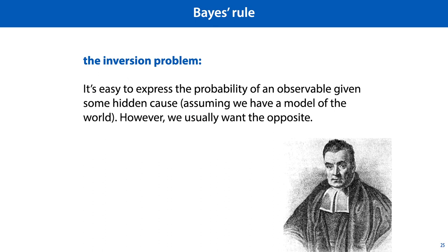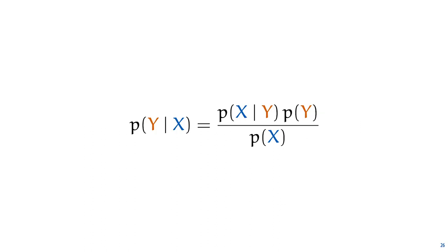The final subject that we need to cover is Bayes' rule. Bayes' rule is a solution to the inversion problem, which we can state as follows. It's often easy to express the probability of observing something given some hidden cause, assuming that we have a decent model of the world. However, we usually want the opposite. We usually know what we've observed, but we don't know what the cause was. So we want to work out the probability of the cause given the observation. This is how Bayes' rule is usually written. We'll look at where this comes from a little later, but first let's look at an example.